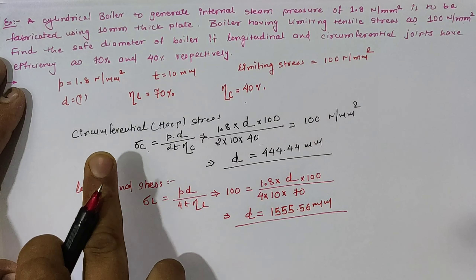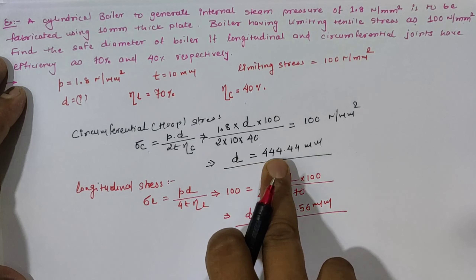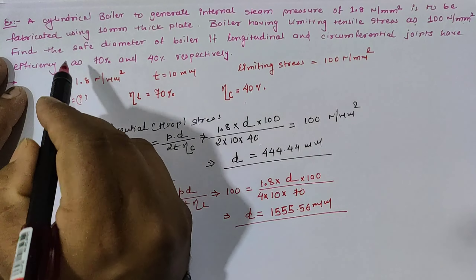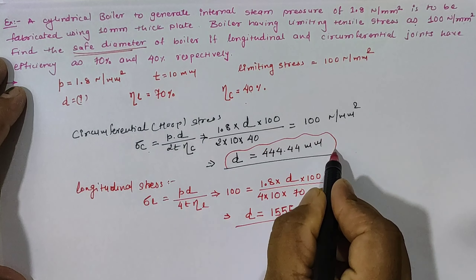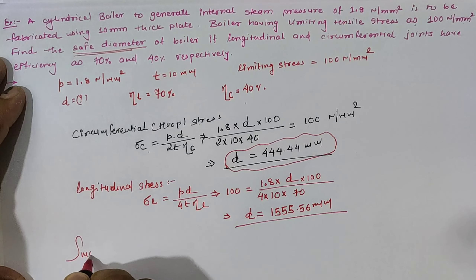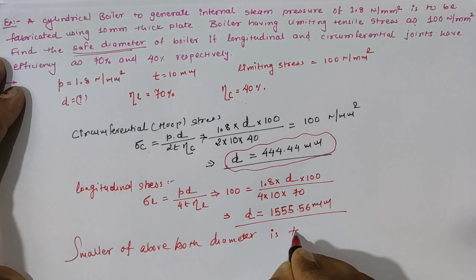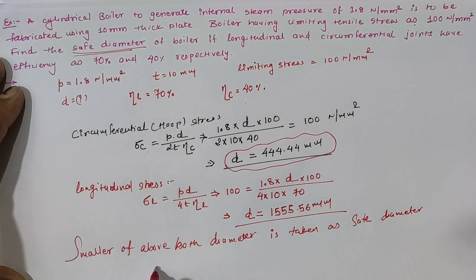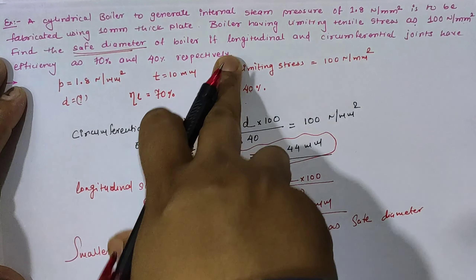So from both calculations, we get diameters of 444.44 mm and 1555.56 mm. The safe diameter must satisfy both conditions, so we take the smaller of the two values. Therefore, the safe diameter is less than or equal to 444.44 mm for the given data.